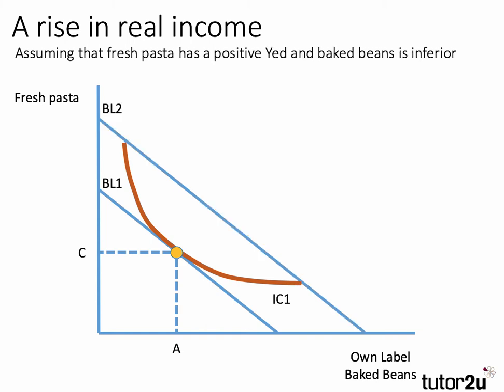Then we increase the consumer's income so they're better off — perhaps because of a tax cut or wage increase. We assume the prices of the two products remain the same. If there's no change in relative price, the gradient of the budget line stays the same. What happens is it shifts out — there's an outward shift in the budget line to BL2, which allows the consumer to move onto a higher indifference curve.